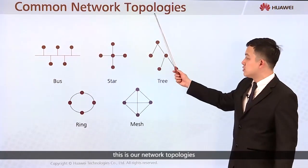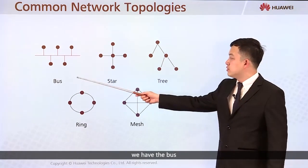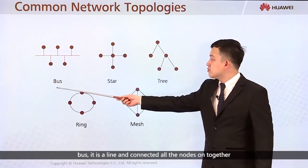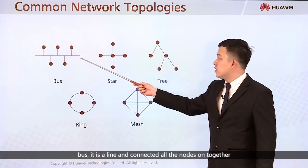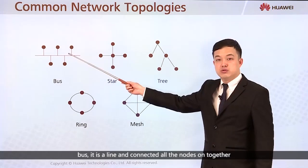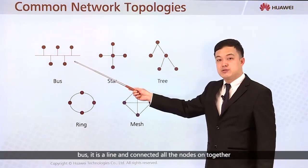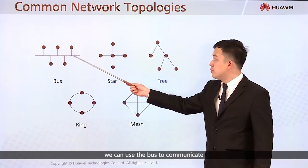These are our network topologies. We have the bus topology — it is a line that connects all the nodes together so they can use the bus to communicate.